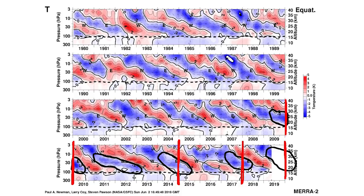Starting with 2009 to 2010, you can see 2010 is at the very left of the bottom row and 2009 is at the very right of the second-to-bottom row. We had a very negative QBO there with all those blues, and I have the red line centered over the winter. Obviously we all know that ended up being a very cold winter for the eastern United States.